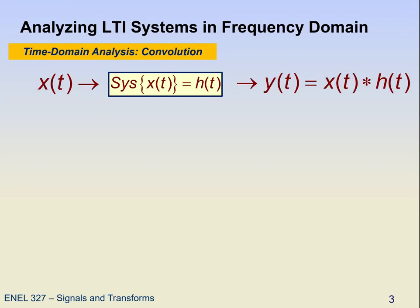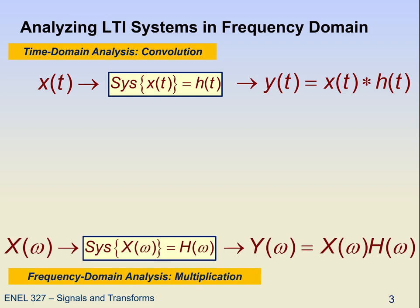Why do we want to do that? Well, the output of a system for an input signal x involves a convolution with the impulse response, and we want to avoid convolution. We know that convolution in one domain means multiplication in the other domain, which is much easier. So if we look at the system in the frequency domain, finding the response is simply a multiplication of H(ω) and X(ω), and H(ω) is called the transfer function.